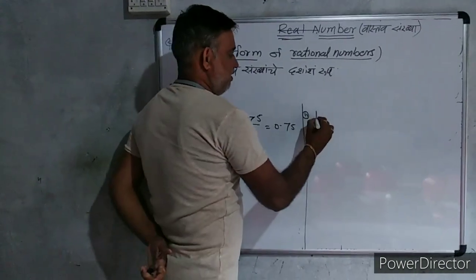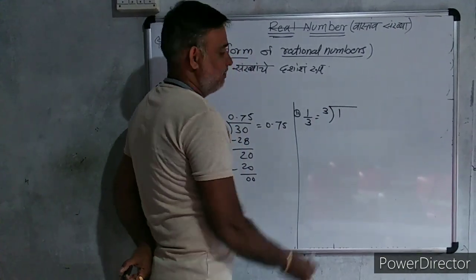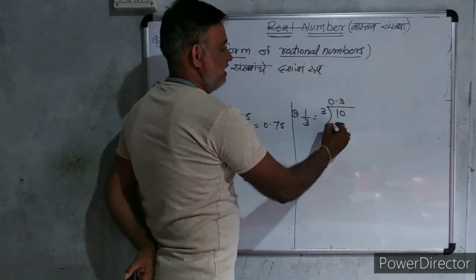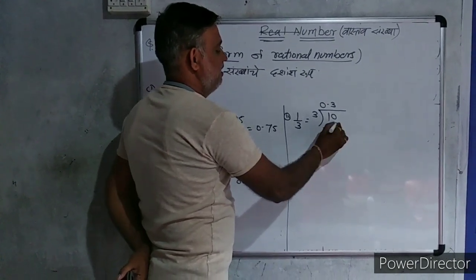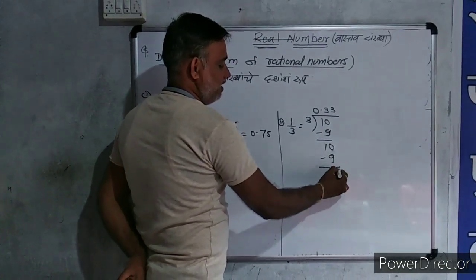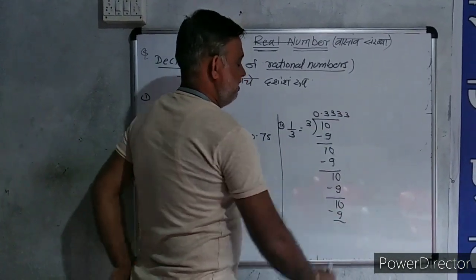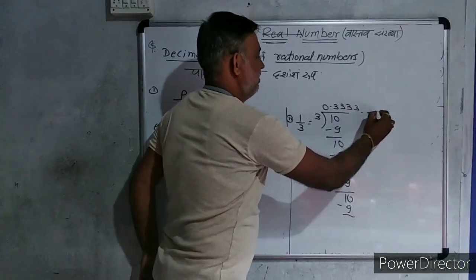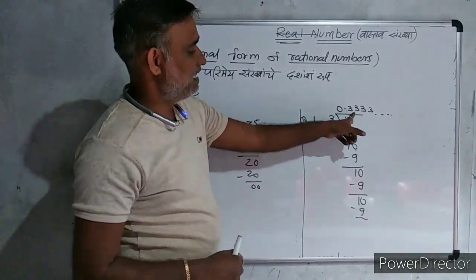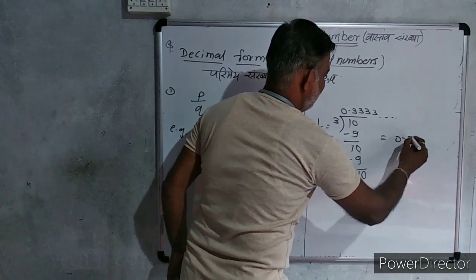Second example: 1 upon 3. If you write 1 divided by 3. Not divisible. Therefore, we take decimal point. Now, 3 threes are 9, 1 remains. Again 0. Again we write 3 threes are 9, 1. Again 0. Again we write 3 threes are 9, 1 remains. In innumerable times we can write the same division process. So we get the same digit here: 3 3 3 3 3. We can write it as 0.3 bar.